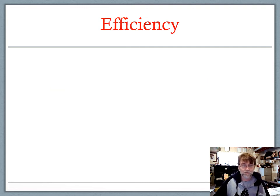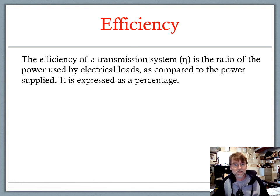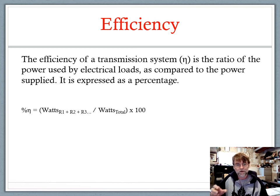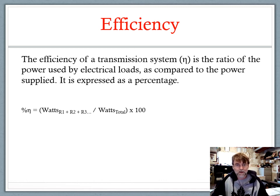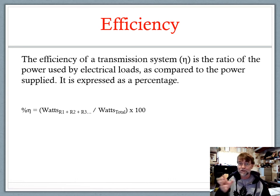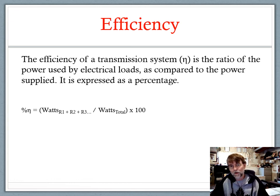So that brings us to the conversation of efficiency. Efficiency in a transmission system — there's the equation, using the symbol mu — is expressed as a percentage. Percent mu equals the power of the loads in the circuit, so watts of R1 plus R2 plus R3, however many loads you have, divided by the total power provided by the power supply, multiplied by 100 to turn it into a percentage.